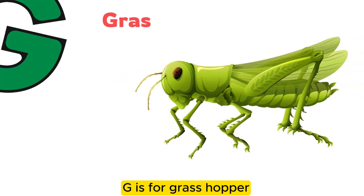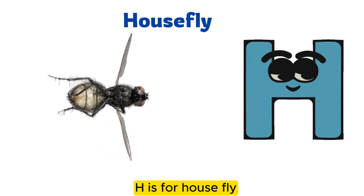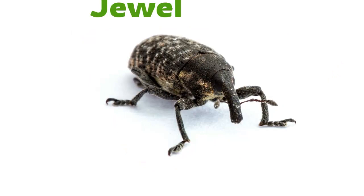G is for Grasshopper. G, G, G, G, Grasshopper. H is for Housefly. H, H, H, H, Housefly.